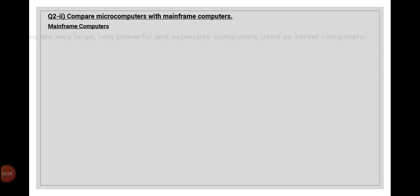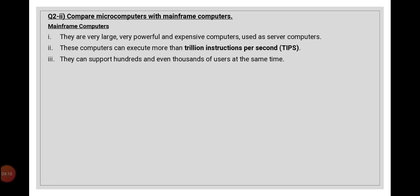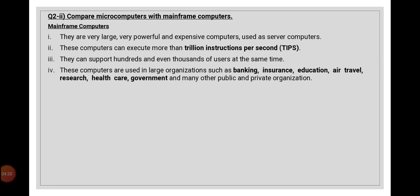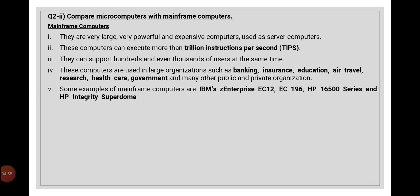The next question is that we have to differentiate between microcomputers and mainframe computers. For mainframe computers: first, they are very powerful and expensive computers, which is why they are used as server computers — computers that provide services to different smaller or lower-speed computers. Secondly, they can execute trillions of instructions in a second. Third, they can support or provide services to hundreds or even thousands of users at the same time.